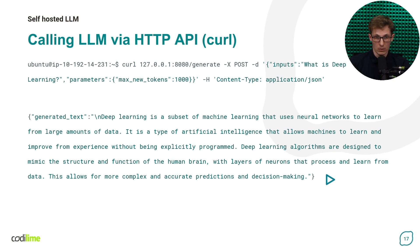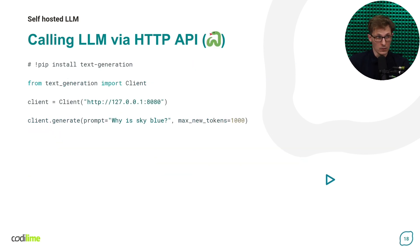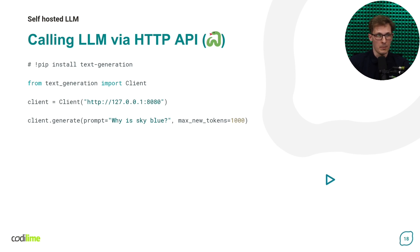Once we have our container deployed, since it's a containerized web service, we can use it simply by issuing a REST API call. We can do it from curl, from Python, or with a custom library provided by HuggingFace. We can basically do it from any programming language. Summing up, this setup is very easy both in terms of setting up your infrastructure and integrating LLM-based features into your software stack, which as a result can bring you and your business much value rapidly.